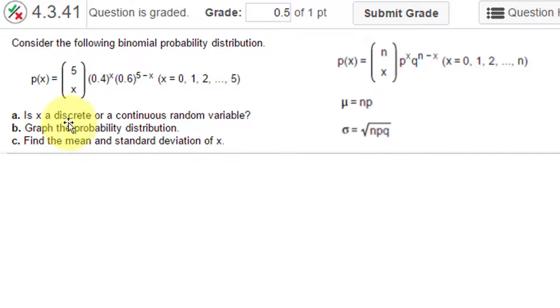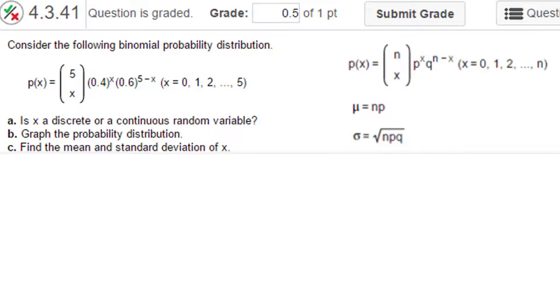Let's answer the first question. Is x a discrete or continuous random variable? Well, by definition, in the binomial, it's a discrete distribution because the only outcomes are success or failure. One success, two successes, three successes, four successes, five successes. You can count those. So that means it's definitely a discrete random variable.